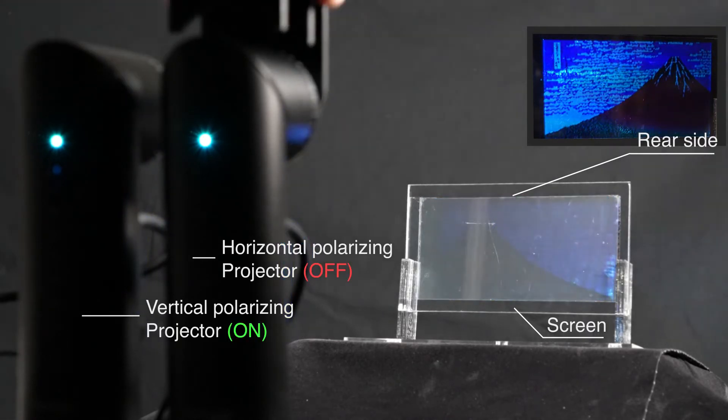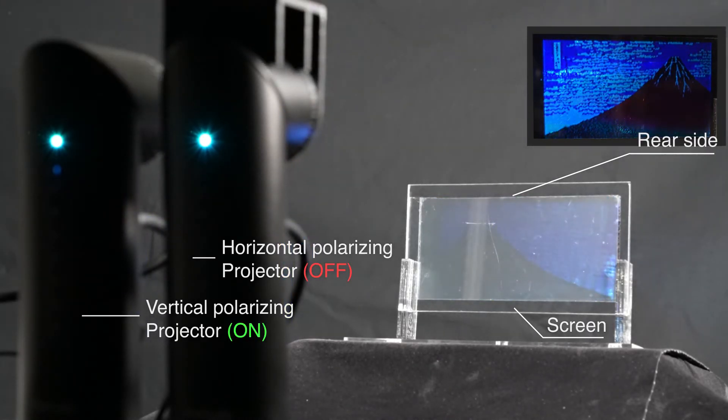Next, let's turn off the right projector and operate only the left projector with the vertical polarization filter. This time, the front side image disappears, but the rear side image is still displayed. Thus, it is the rear projection mode.